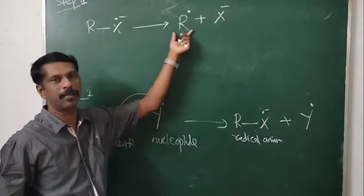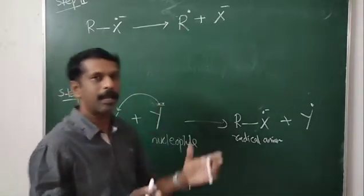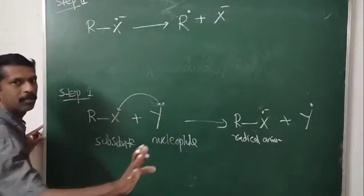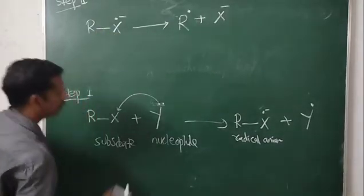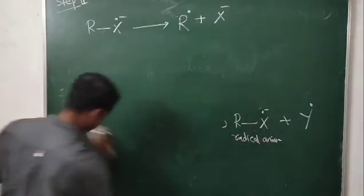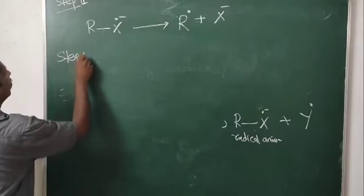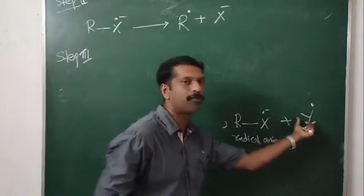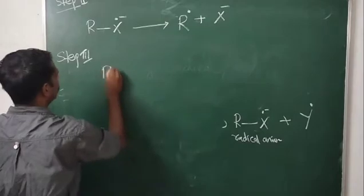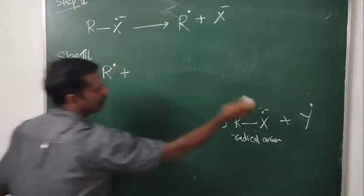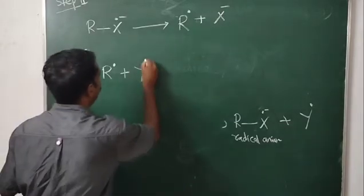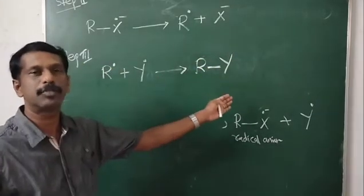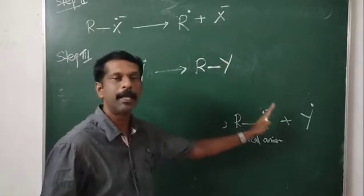In the final step, Step 3, this free radical can go to the final product. RX: X will be replaced by Y — that is our final product. This R free radical will combine with the Y free radical formed in the first step. They join together and you get the final product RY. Here the nucleophilic substitution reaction has taken place — X is replaced by Y.